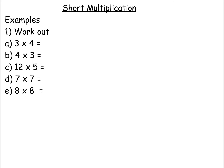Let's look at some short multiplication. There are some multiplications where we just need to know our times tables. So here, let's work out three times four — three times four is 12. Now for some of you it will be as easy as that, knowing straight away that the answer is 12. For some of you, you may need to write down that one times four is four, two times four is eight, three times four is 12. Writing down your times tables can help you.